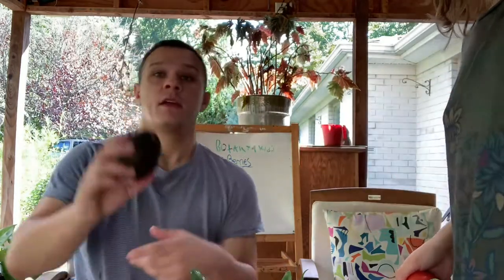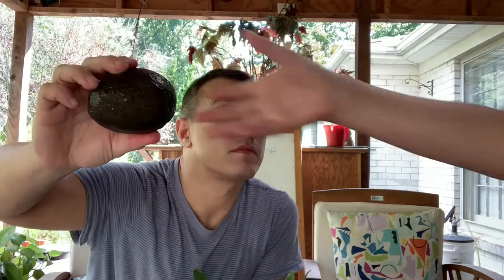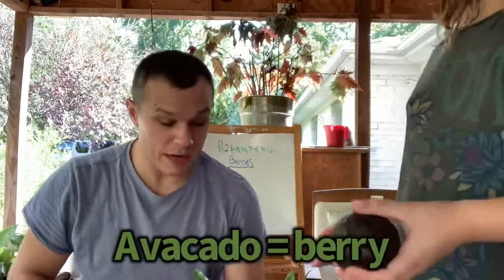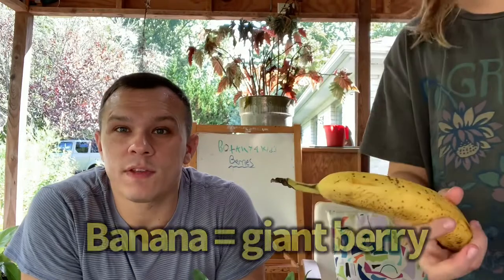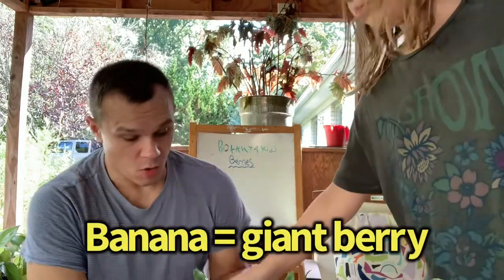We have a couple other surprises for you. This comes from one ovary — what is this called? It's an avocado. That just comes from one ovary and that's one fruit from one flower, so that is also a berry. And believe it or not — what is this? A banana. A banana is also a berry. So it may be very surprising, but a berry is just a very specific kind of fruit in botany that comes from one ovary and one pistil and one flower.